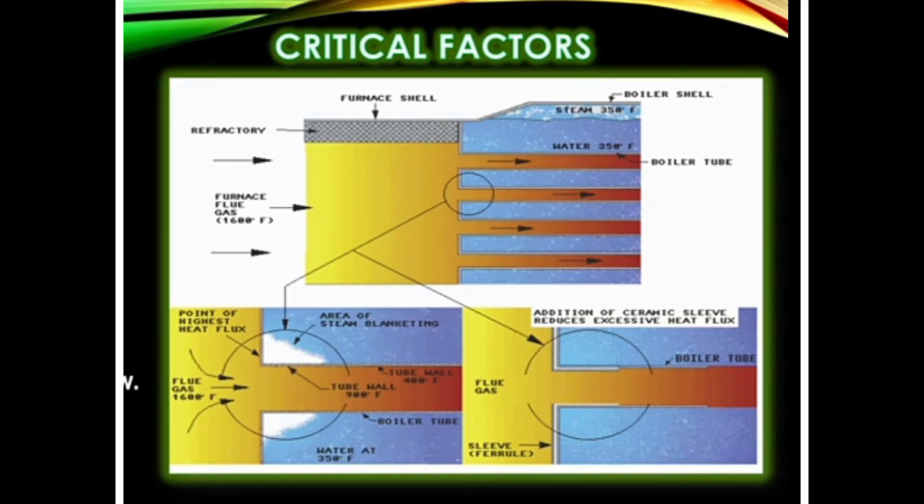One additional point: steam blanketing can also occur due to flame impingement. If your flame is directly touching the tubes, it is called flame impingement. Due to flame impingement, there are high chances of steam blanketing, which will cause overheating of the tube and ultimately lead to its failure.